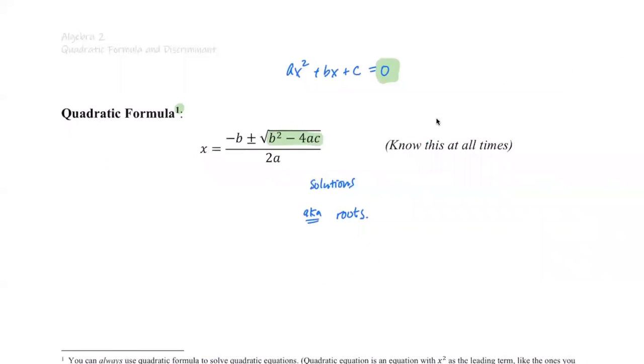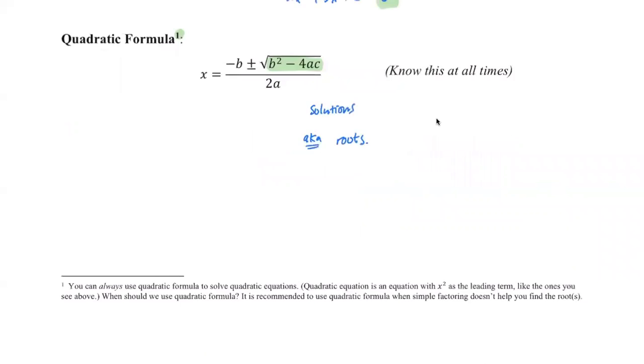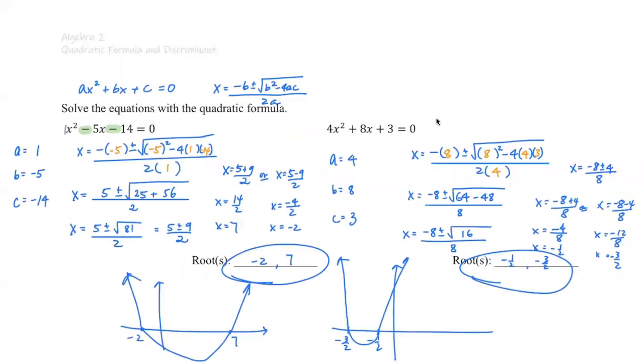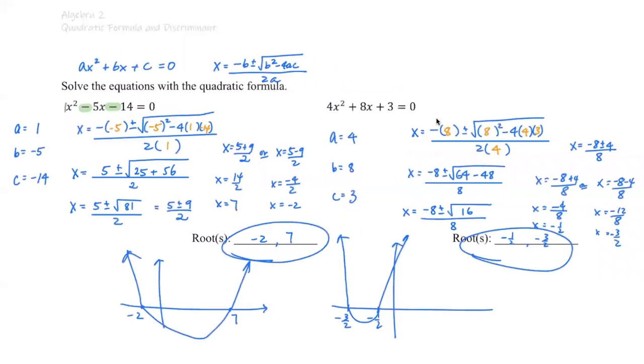Now, we call this a discriminant because it helps us see something. To see what? To see the number of roots. Now, I'm going to go ahead and highlight the discriminant value for those examples. For example number one, this is our discriminant. It's 81.